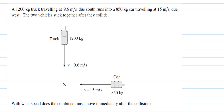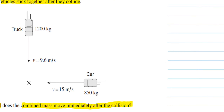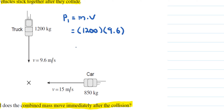Here's one last collision problem. We have a 1200 kilogram truck traveling at 9.6 meters per second due south, and it runs into an 850 kilogram car traveling at 15 meters per second due west. The two vehicles stick together. Let's find the truck's momentum P1: 1200 times 9.6 equals 11,520 kilogram·meters per second going south.